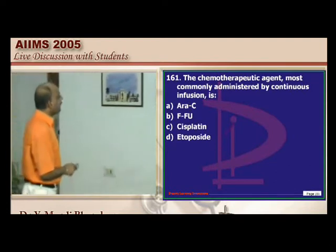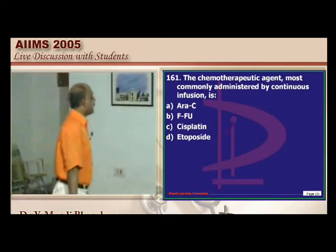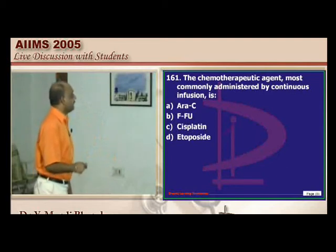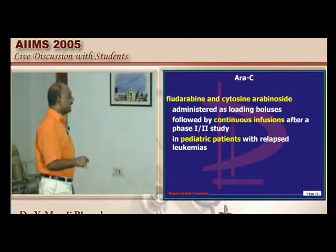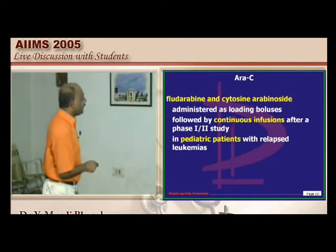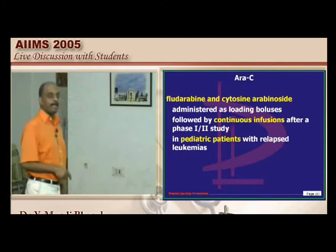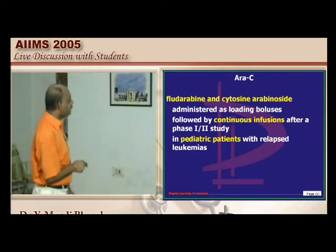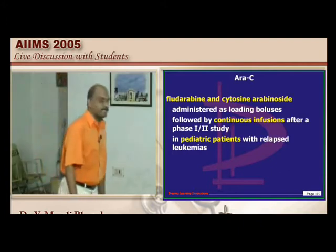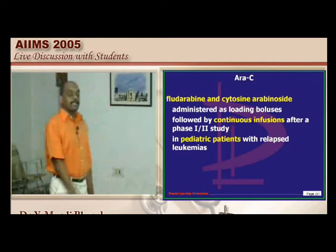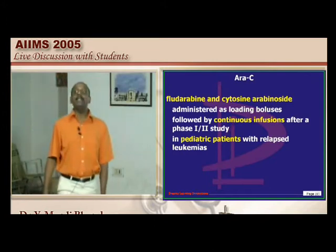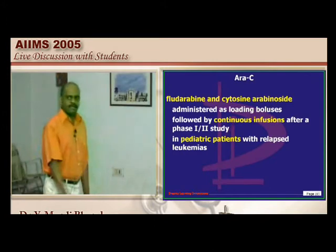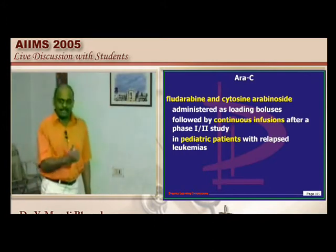Which chemotherapeutic agent is given by continuous infusion? It is cytosine arabinoside — fludarabine cytosine arabinoside — used in relapsed childhood leukemias as part of chemotherapy, given by continuous infusion. Methotrexate is given intrathecally to prevent relapse.